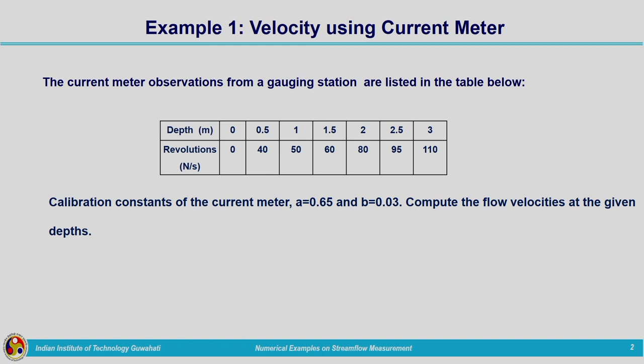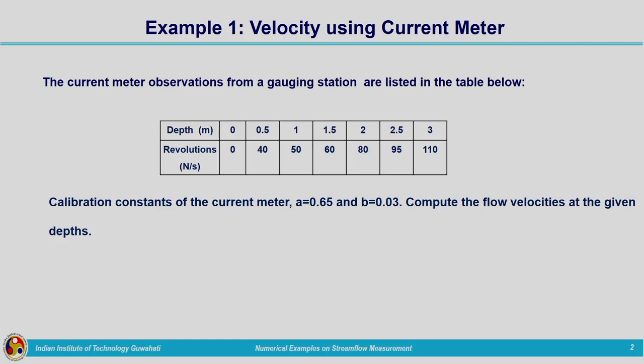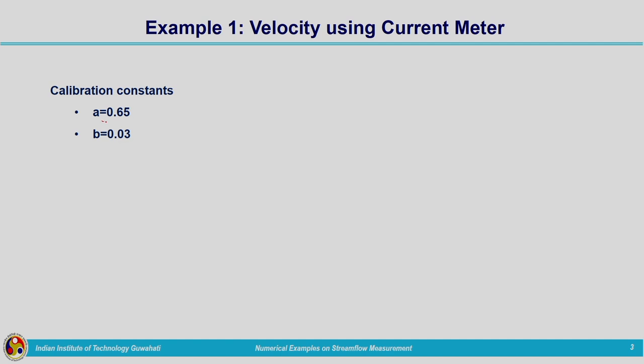We have been given certain depths and corresponding current meter readings, that is rotations per second at every depth. We know there is an equation to calculate the velocity for a particular current meter, and for different current meters the calibration coefficients will be different. The calibration constants for this particular current meter are a = 0.65 and b = 0.03. The formula for velocity calculation using current meter readings is V = a + bn, where a and b are calibration coefficients and n is the rotations per second.